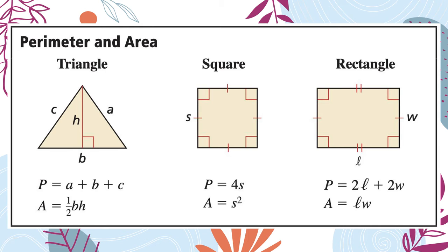Perimeter of a triangle is adding all the sides together. Perimeter of a square is adding all the sides together, or since the sides are all the same length, just multiplying 4 times the side length. Perimeter of a rectangle is 2 times the length plus 2 times the width because we have length plus length plus width plus width.